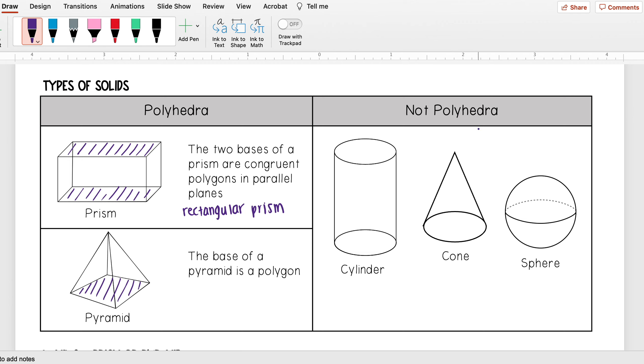And then these ones are not polyhedra, so we have cylinders which just kind of look like a can. We have a cone, and then we have a sphere. These shapes have curved edges.